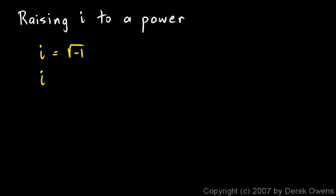Now if we take this imaginary unit i and we raise it to a power, we get some pretty interesting results. Remember that i, by definition, is equal to the square root of negative 1. i squared is the square root of negative 1, squared, which is just going to be negative 1. So i squared is negative 1.